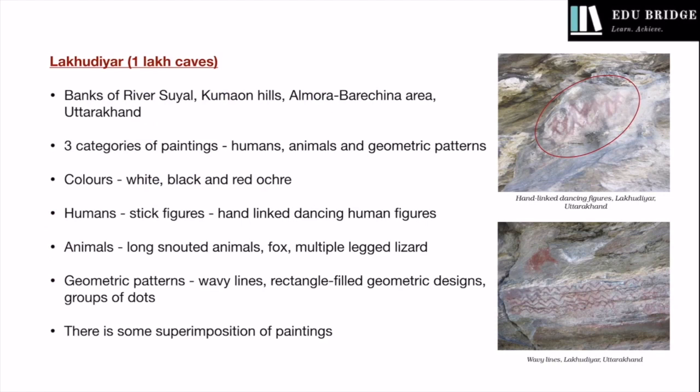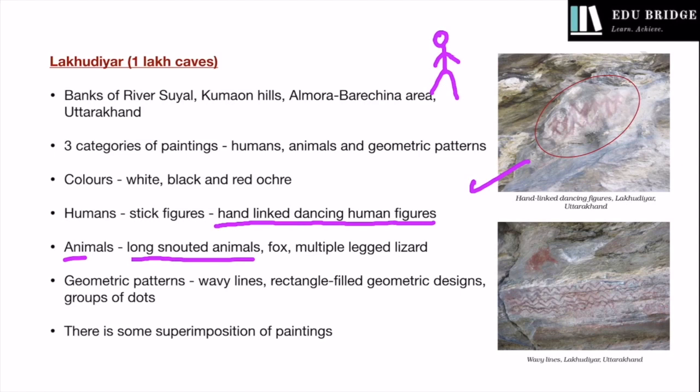Humans have been shown as stick figures — it is not a naturalistic depiction, but a stylistic one. They have been shown performing activities such as dancing after linking hands, so hand-linked dancing human figures are depicted. Various animals have been shown, such as long-snouted animals, fox, and multiple-legged lizards — both real as well as imagined animals are represented. Geometric patterns include wavy lines, rectangle-filled geometric designs, and groups of dots.